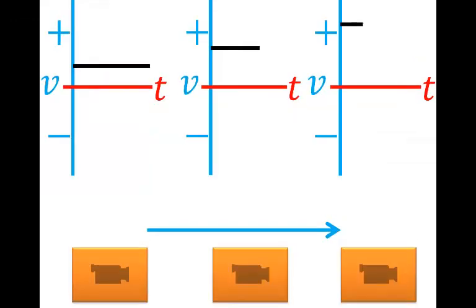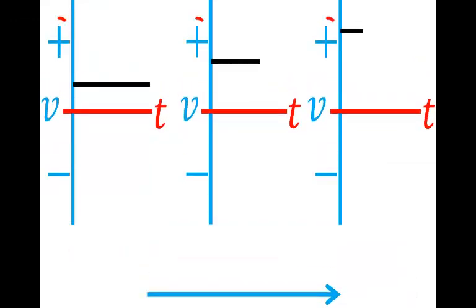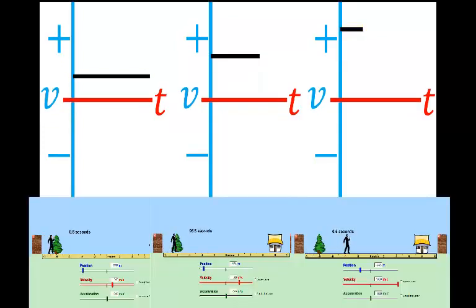For each of these graphs, the velocity is positive, so the direction is the same. So the man is going to head towards the right in all three cases. The difference between the three graphs is the magnitude of the velocity. Here he's going to go slowly, faster, and fastest. And that is what we see.